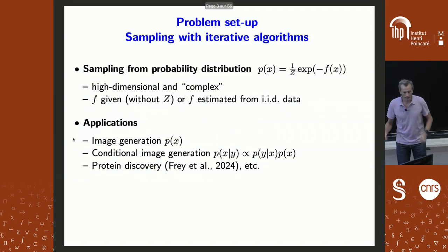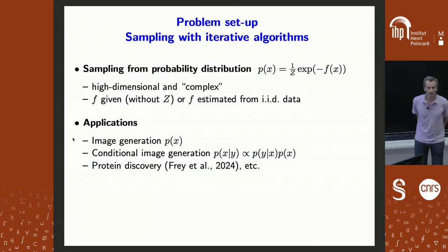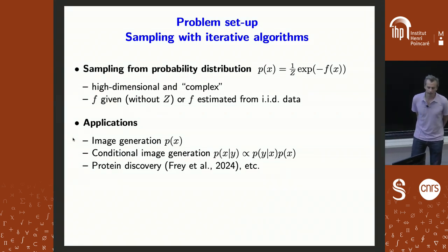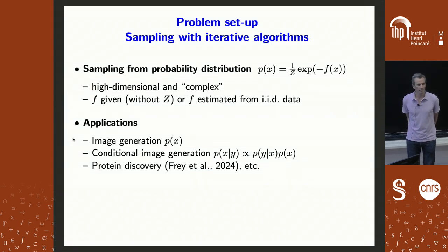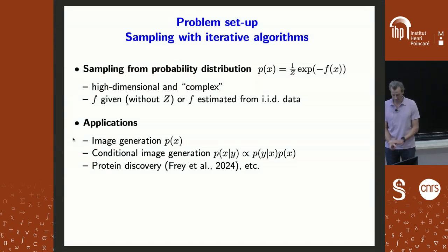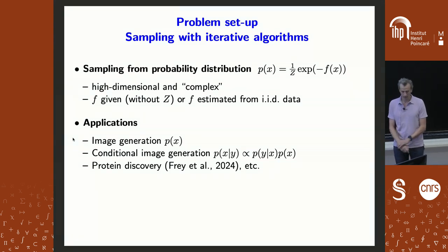Clearly, image generation is not the only reason why we do all this. A very nice paper by a colleague of mine, where Frey is the first author, does protein discovery — you generate proteins with a given target. So this can be used not only to produce pretty images, but also to do things which are probably more useful.